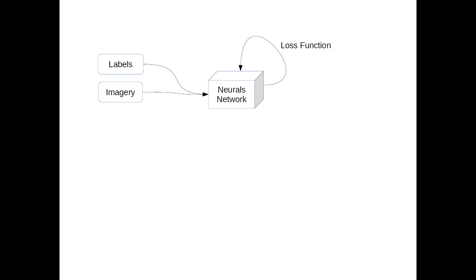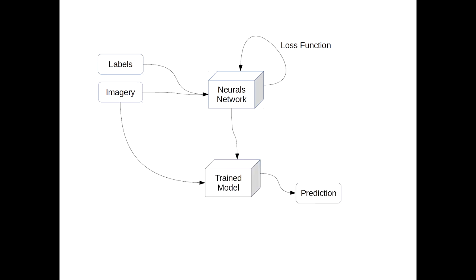How does it work in concept? First, you have to train a model. It's a supervised model — supervised training. Your model has to be trained with labels from imagery, and it's trained with a loss function dedicated to extract meaningful information from the difference between these two datasets.